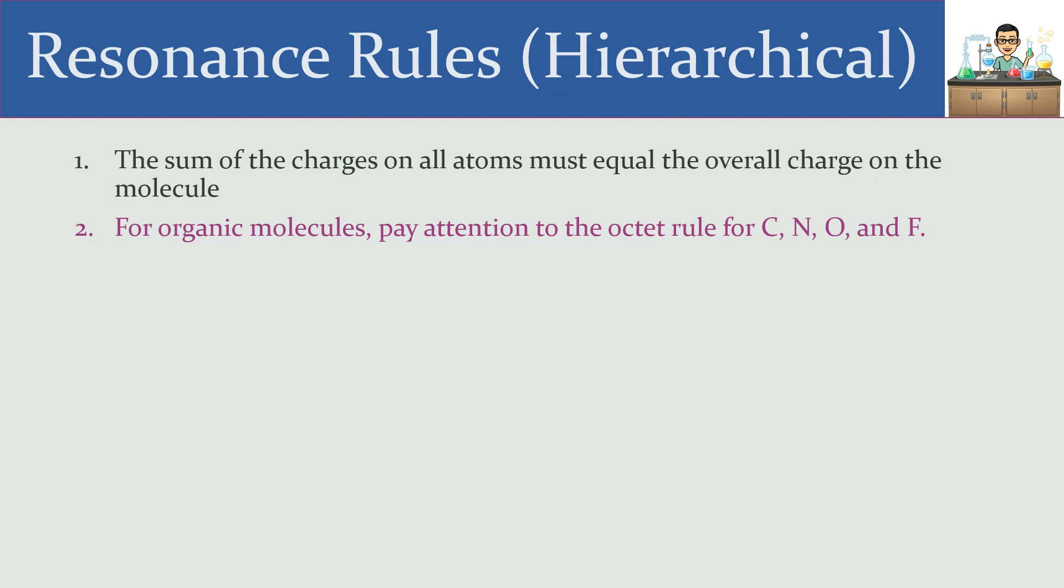Now, other atoms, like for example phosphorus, sulfur, chlorine, and so on, they don't necessarily have to have eight electrons around them. Sometimes they have a few more than that. But in terms of a hard and fast octet rule, carbon, nitrogen, oxygen, and fluorine, those are ones that you want to pay special attention to.